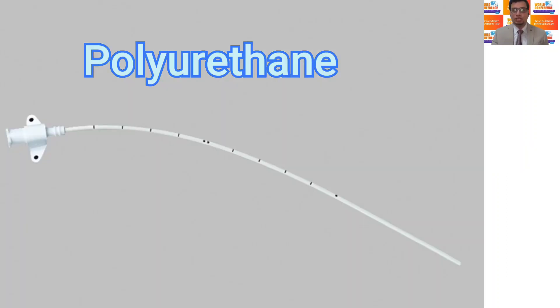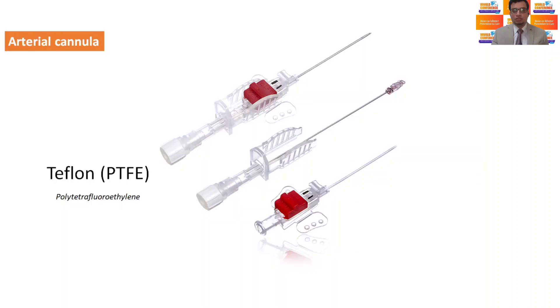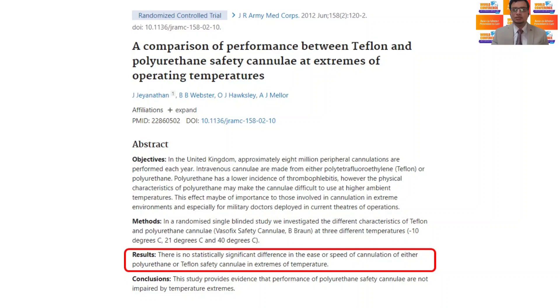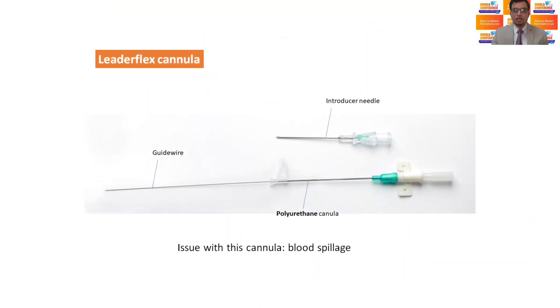The material of cannula is usually either polyurethane or Teflon. There is no statistically significant difference in the ease or speed of cannulation of either polyurethane or Teflon cannoli. Polyurethane is softer, hence requires a guidewire for insertion.